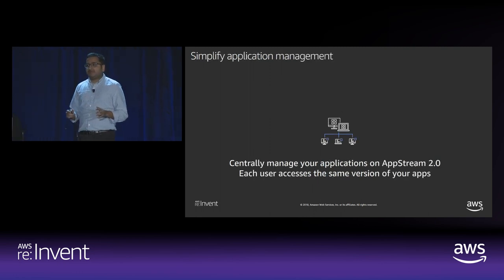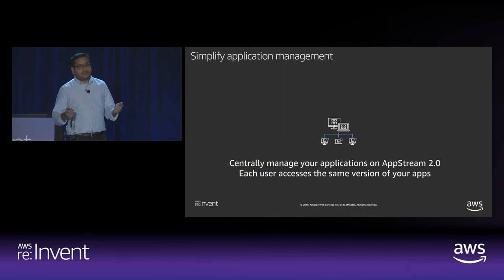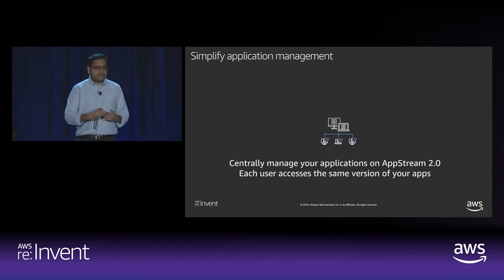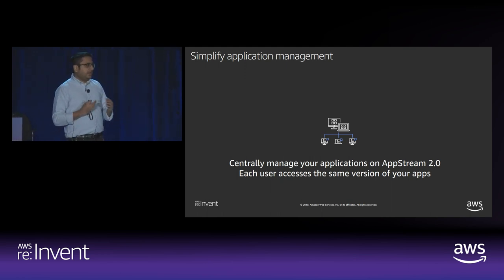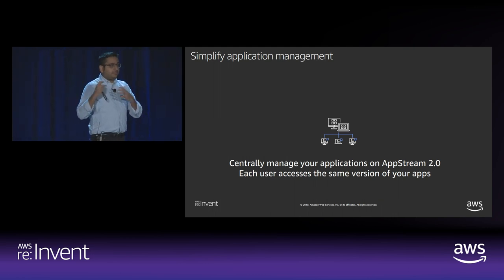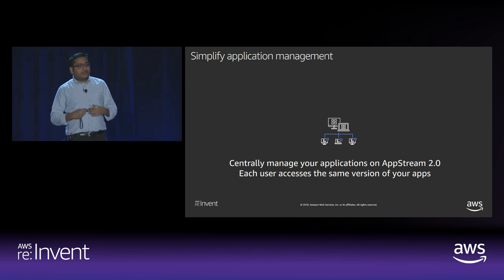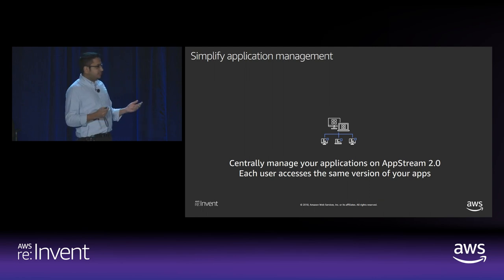Application management is extremely simple with AppStream. We provide you an admin desktop called Image Builder. You install your applications, create a golden image, and we use that image to launch thousands of instances to support your users. To install updates or patch applications, you simply launch an Image Builder from your existing image, patch your applications, and build a new image. Users connecting via the new image instantly receive product updates because they access applications like a web app. This completely eliminates the need to patch or upgrade applications on every end-user device, invest in expensive application deployment tools, or invest in endpoint security tools to secure devices on which your applications are installed.